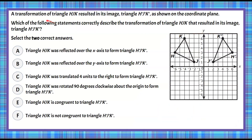Here's our question today. A transformation of triangle HJK resulted in its image triangle H'J'K' as shown on the coordinate plane. You're asked which of the following statements correctly describe the transformation, and you're asked to select the two correct answers. Pause now, pick two of these six selections that are true, then come back and hit play to check your work.